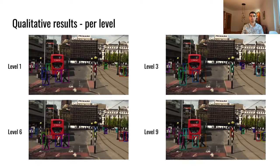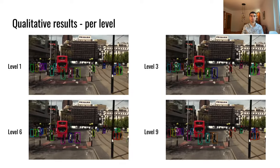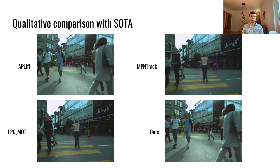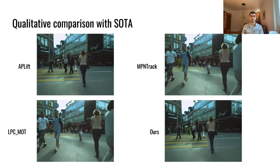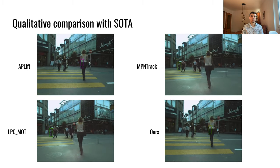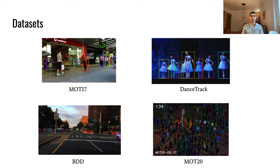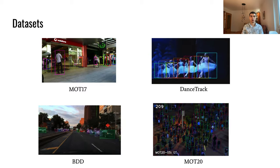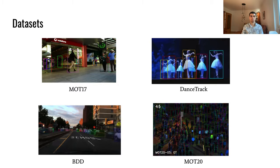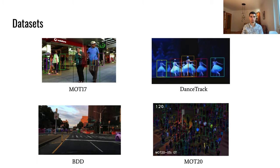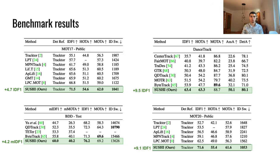Qualitatively, we observed how deeper levels in our hierarchy produce longer track clips, which span over the entire clip at the last level. We also observed that our model is able to preserve identities after long occlusions better than state-of-the-art methods. This can be explained due to its ability to process long clips at once. We report benchmark results over four highly diverse datasets: MOT17, MOT20, DanceTrack, and BDD100K. Our method sets new state-of-the-art results on all four of them by a significant margin, with IDF1 improvements of up to more than 9 points. These consistent improvements show the generality of our approach and its ability to exploit cues differently over various datasets.